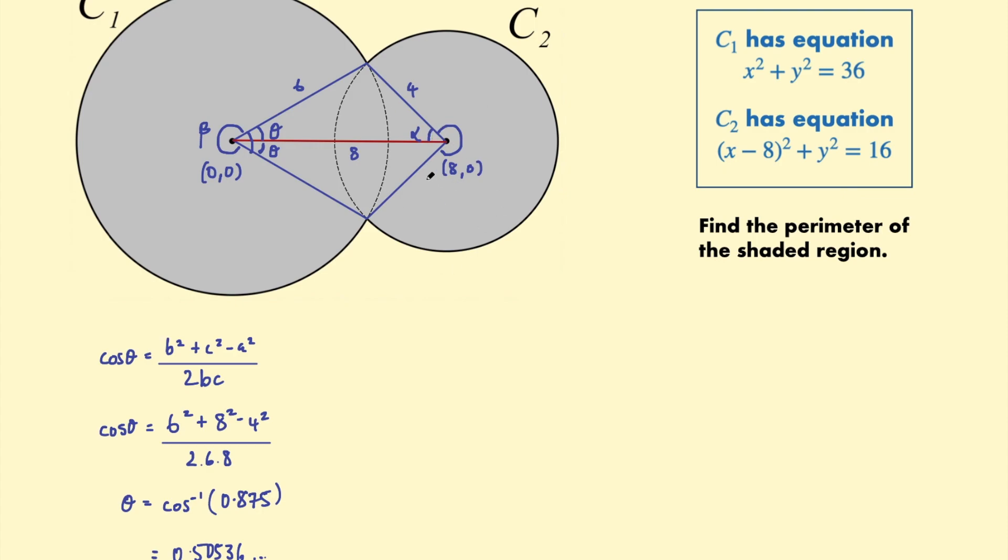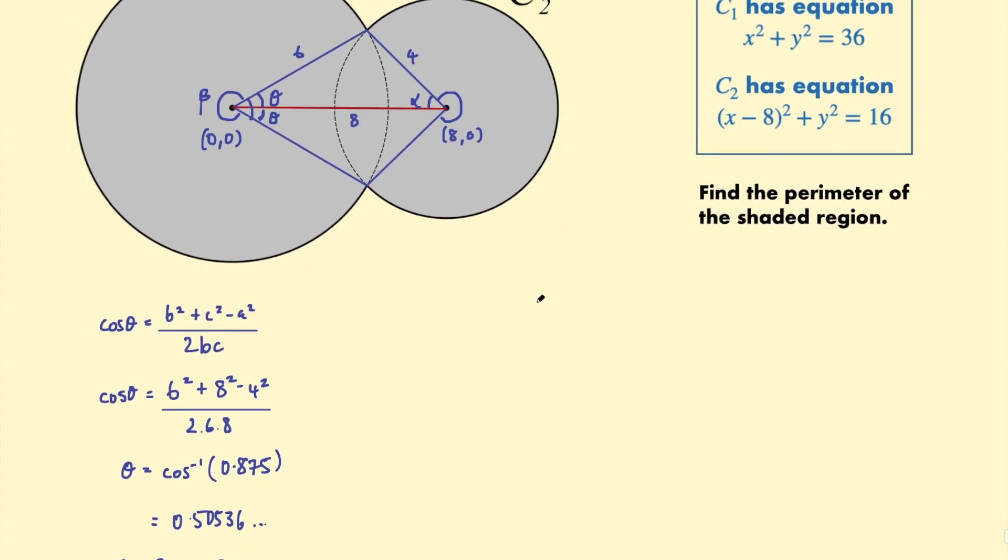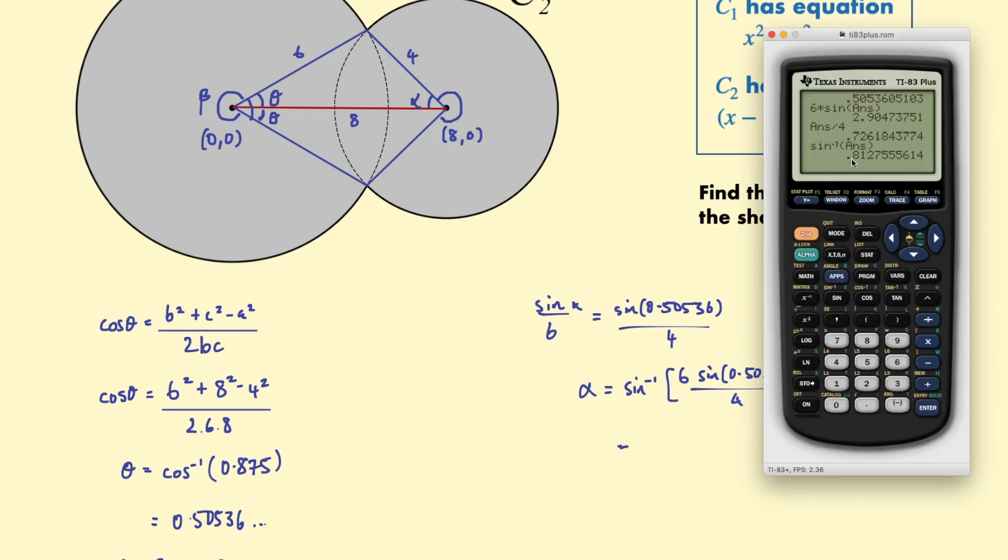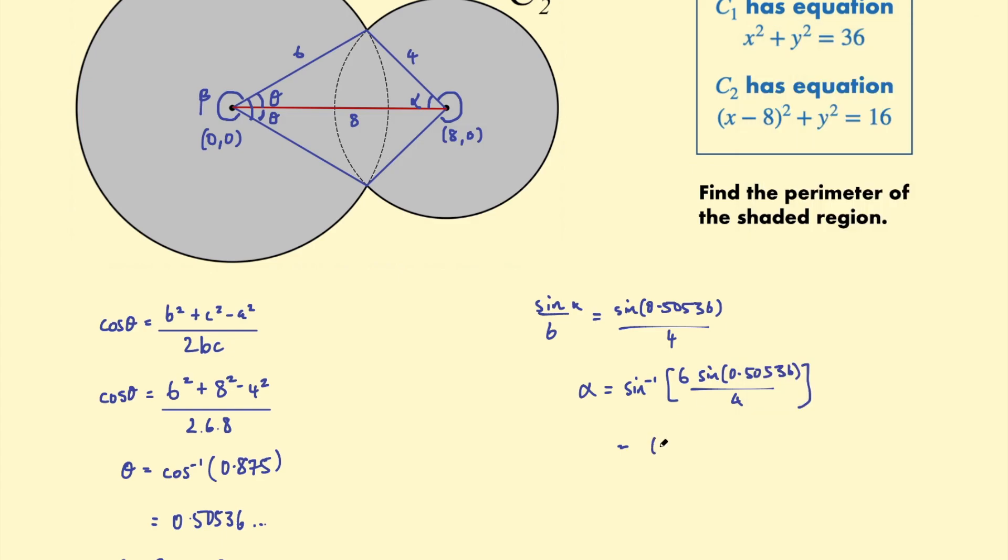Let's go ahead and do the same thing for the smaller circle. Firstly I want alpha. Now I don't need to use the cosine rule again. I could use the sine rule. Possibly it's slightly quicker. Well you could use the cosine rule again if you prefer that but we can use the sine rule. So sine of alpha over the opposite side which is 6 is equal to the sine of theta. Theta was 0.50536 over its opposite side which is 4. So then alpha is going to be the inverse sine of 6 multiplied by the sine of 0.50536 over 4. Okay let's go ahead and work that out. So I get 0.8127 and so on. So 0.81275556.